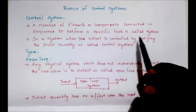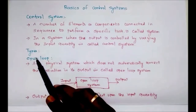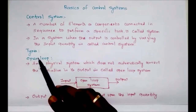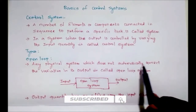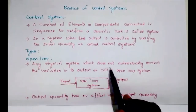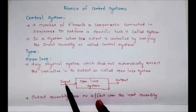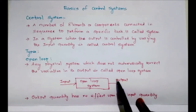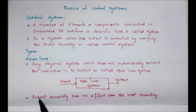A control system is a system where the output is controlled by varying the input quantity. There are two types: one is open loop system and another one is closed loop system. An open loop system is any physical system which does not automatically correct the variation in its output. In this open loop system, the output quantity has no effect upon the input quantity.